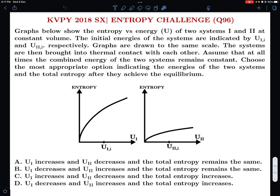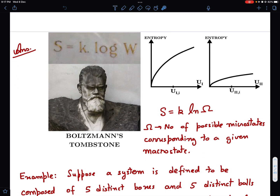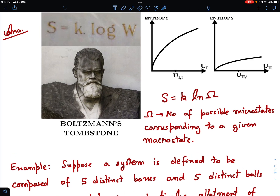One thing students get correct immediately is that entropy of the system must be increasing — it cannot decrease. If any heat transfer is happening, it should happen to increase the entropy. So they are sure it can't be options A or B, and it must be somewhere between options C and D. But how exactly to solve this is where many students choose the wrong one.